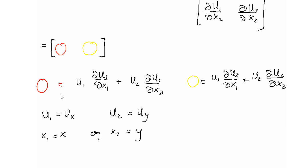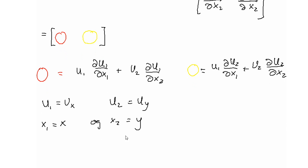In this course we only consider two components: the first in the x-direction and the second in the y-direction. So we may replace u1 and u2 with ux and uy respectively. Please don't confuse this with the derivative of u with respect to x and y, which we sometimes use as notation. Moreover, x1 is replaced by x and x2 is replaced by y.